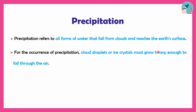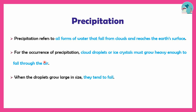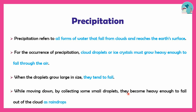When the droplets and ice crystals in the clouds are heavy enough, they will fall and reach the earth's surface. This is called raindrops.